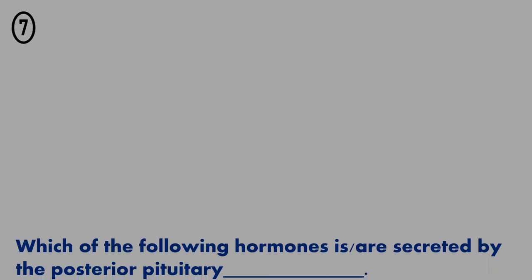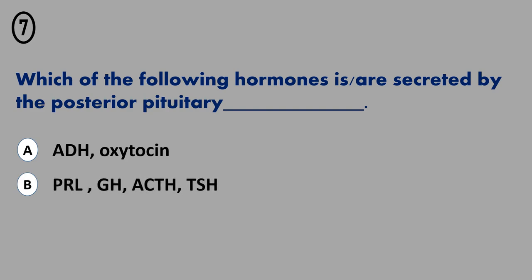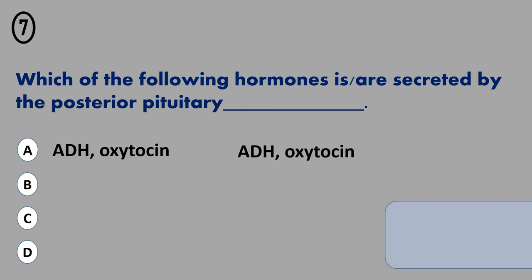Question 7. A. ADH, Oxytocin; B. PRL, GH, ACTH, TSH; C. Thyroxine; D. Adrenaline. The correct answer is...